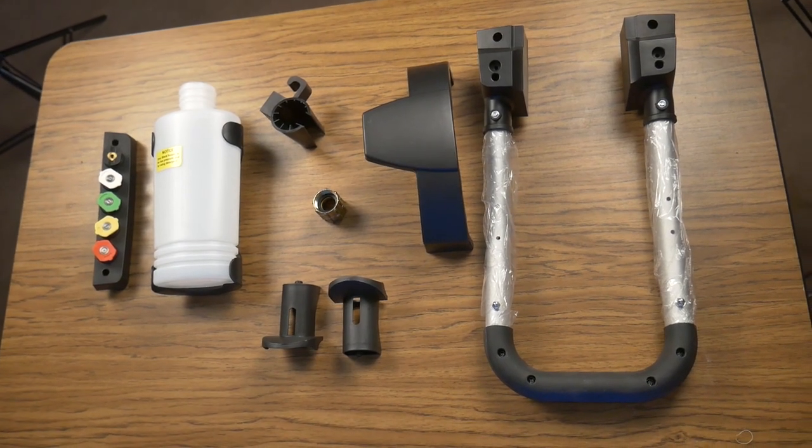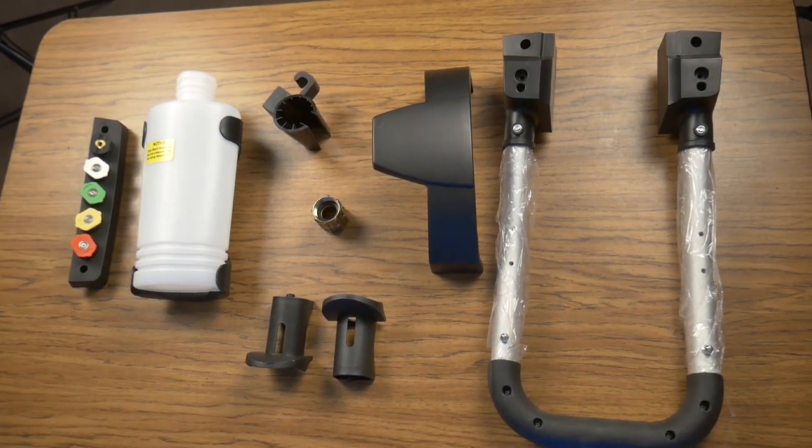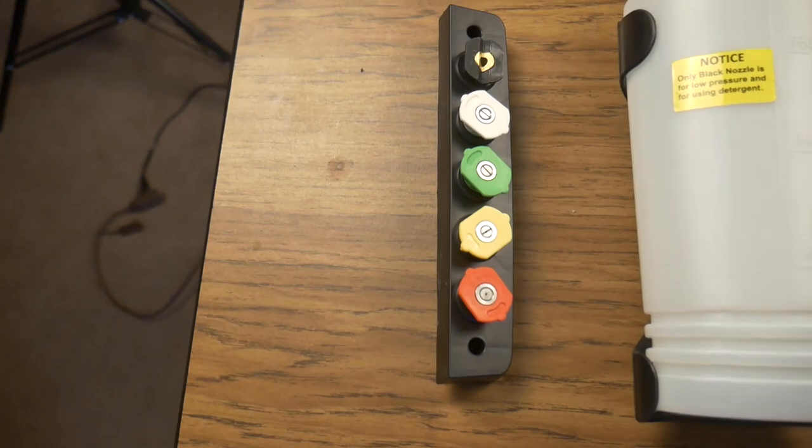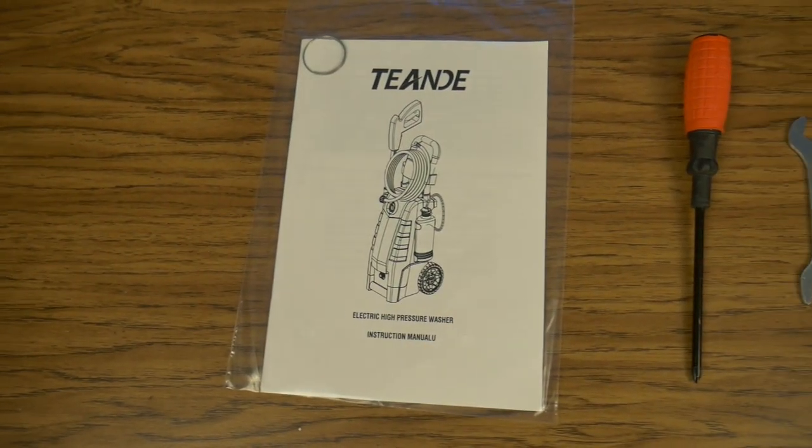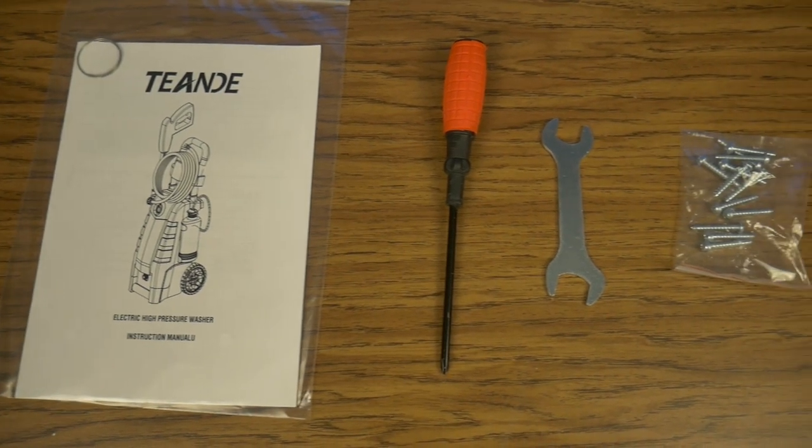All the other bits and pieces including a handle, soap dispenser, and interchangeable nozzles for the wand. Also provided are a set of instructions, a screwdriver, a double ended wrench, and some screws.